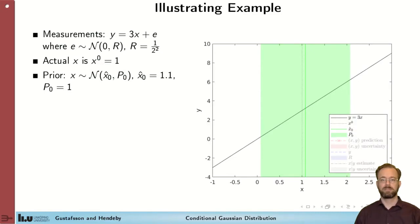So we'll start with an illustrating example. Here we have a parameter X with true value 1 that we have prior information about, illustrated by this green line and uncertainty around it. And we have measurements Y that are 3 times X plus measurement noise.